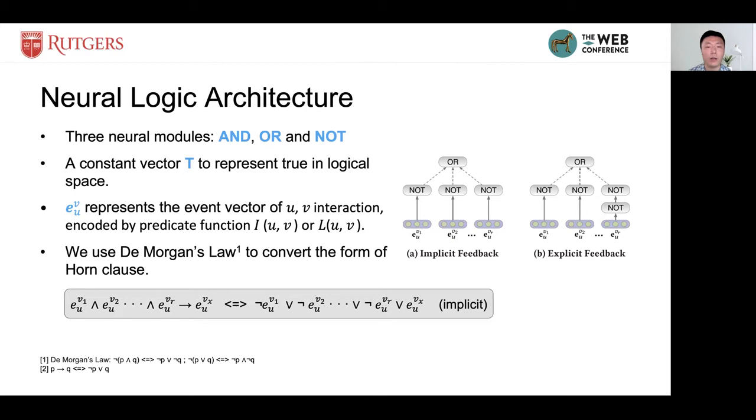It's constant, which means once it is initialized, it will not be updated during the learning process. We use e_uv to represent the event vector of uv interaction, encoded by predicate function i or l. Then, we use De Morgan's law to convert the form of the Horn clause as follows.